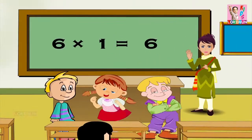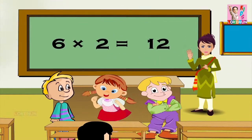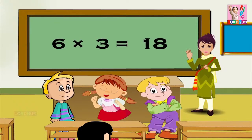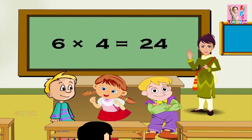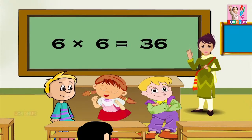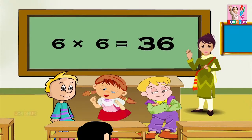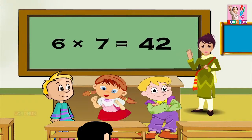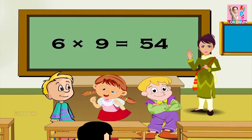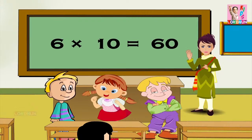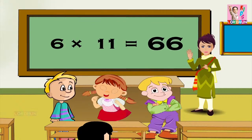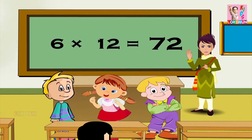6 1s are 6, 6 2s are 12, 6 3s are 18, 6 4s are 24, 6 5s are 30, 6 6s are 36, 6 7s are 42, 6 8s are 48, 6 9s are 54, 6 10s are 60, 6 11s are 66, and 6 12s are 72.